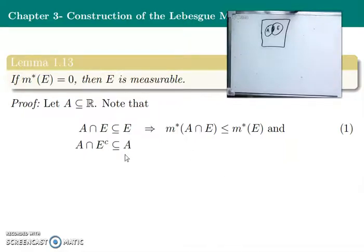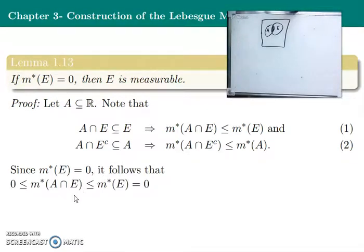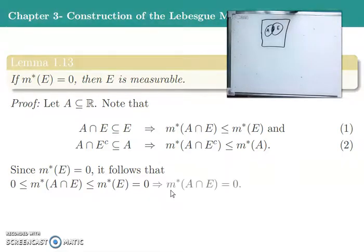We also know that A∩Eᶜ ⊆ A, so λ*(A∩Eᶜ) ≤ λ*(A). By our assumption, λ*(E) = 0. Since the Lebesgue outer measure of any set is ≥ 0, and λ*(A∩E) ≤ λ*(E) = 0, it follows by the squeeze argument that λ*(A∩E) = 0. Therefore λ*(A∩E) + λ*(A∩Eᶜ) = 0 + λ*(A∩Eᶜ) ≤ λ*(A).